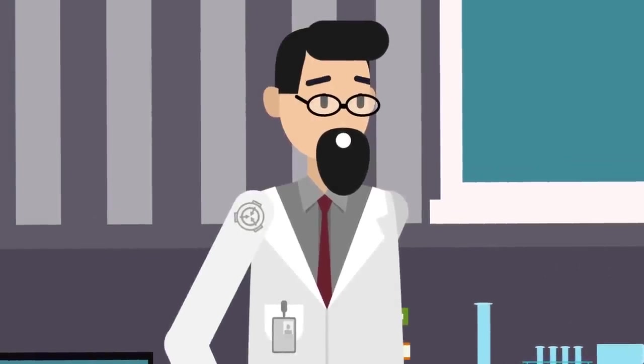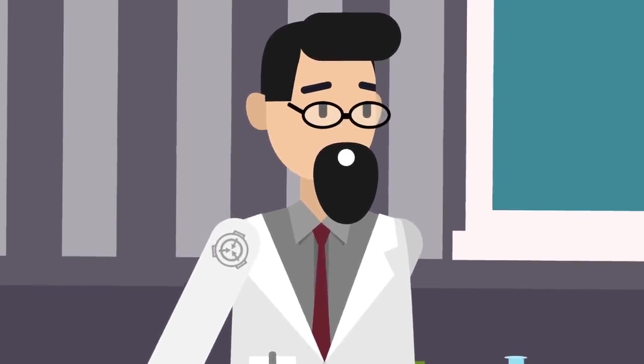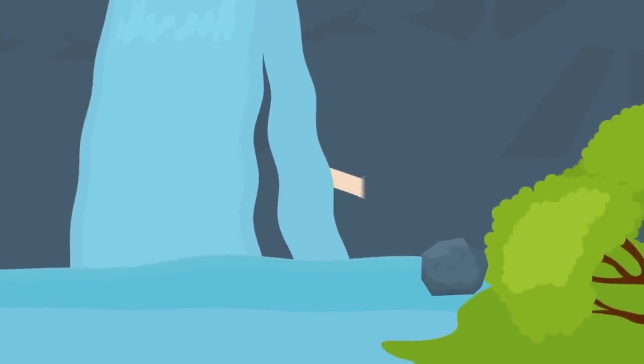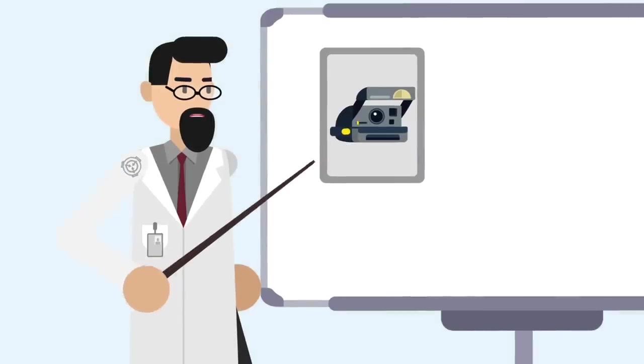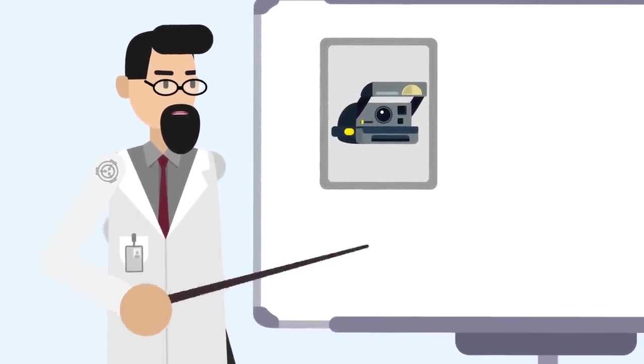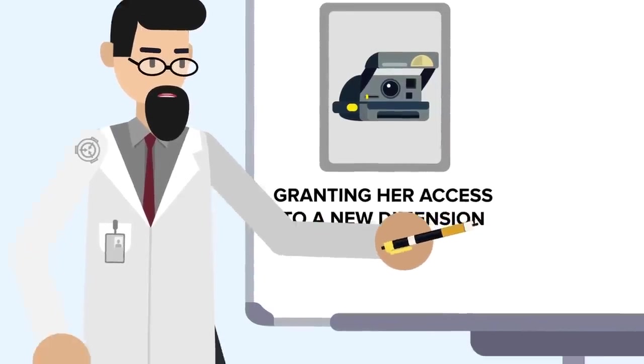SCP-105 is then able to move her arm through and into the photograph and manipulate objects within reach of the original point at which the photograph was first taken. Yes, you heard me right. SCP-105-B doesn't just offer Iris quick prints of memories, it gives her much more, granting her access to a new dimension.